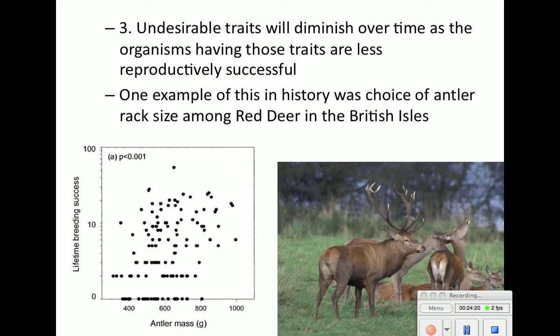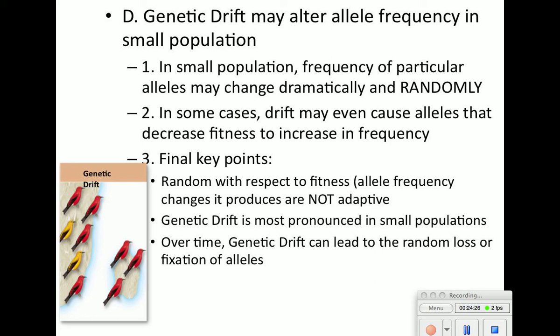Moving on to genetic drift. Genetic drift may alter allele frequency in small populations — a huge difference from Hardy-Weinberg which assumes large populations. In small populations, alleles may change dramatically and randomly. Drift can cause alleles to decrease or increase fitness, going either way. Key points: it is random with respect to fitness; most pronounced in small populations; and can lead to random loss or fixation of alleles. There are different types of genetic drift.